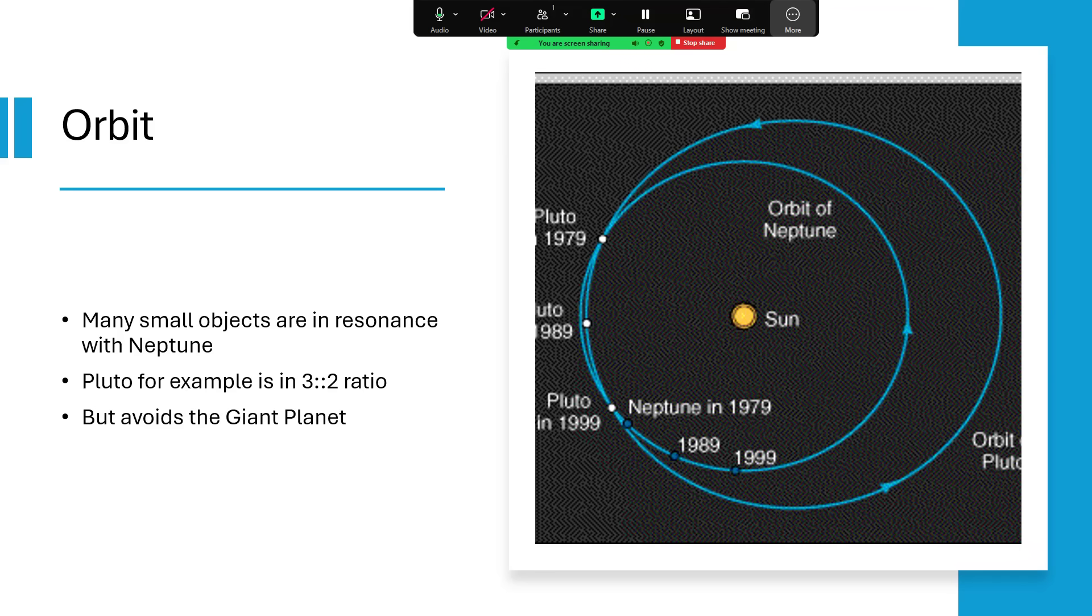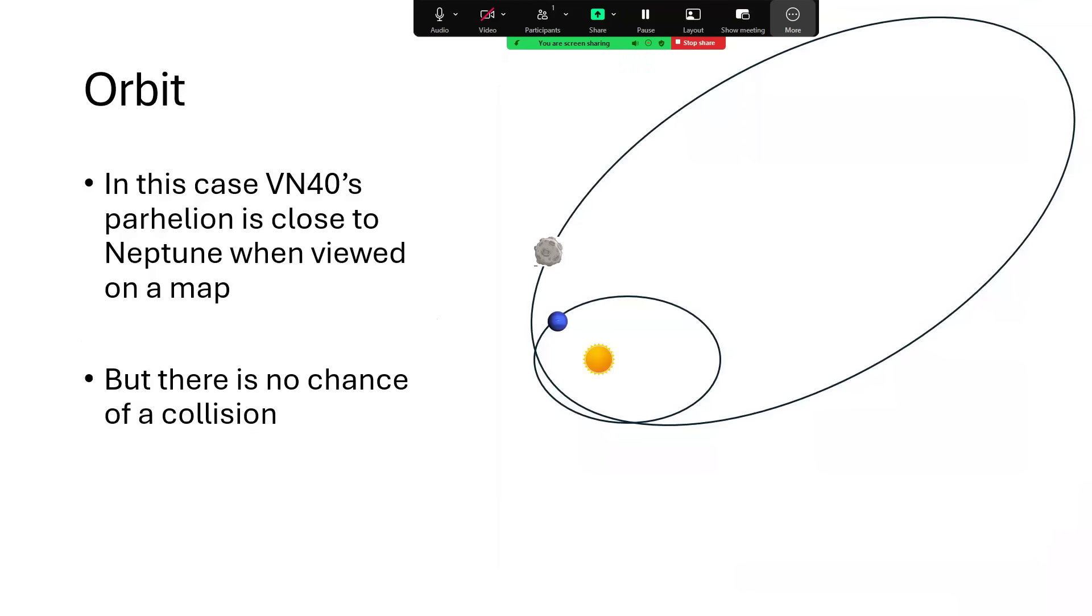This also stabilizes Pluto's orbit because every time it reaches the perihelion point, Neptune is either on one side of the orbit or the other, and they alternate. So the kicks it gets from Neptune because of this one and a half to one relationship cancel out in the long run. And so Pluto gets a kick one way and then a kick the other way. But in this case, the N40's orbit crosses that of Neptune when viewed in a plan view like this, and it's in a 10 to one orbit. But there's still no chance of it colliding.